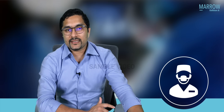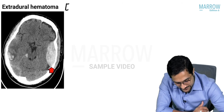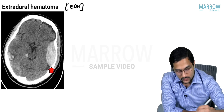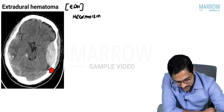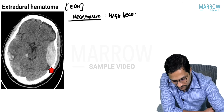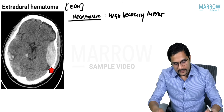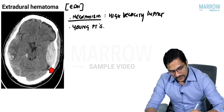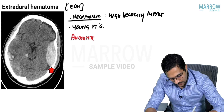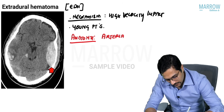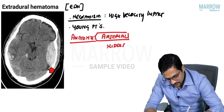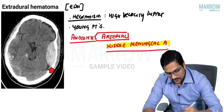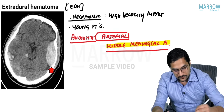The next important condition is EDH or extradural hematoma. EDH occurs due to a high velocity impact. The age group in which it is seen is usually young patients. Anatomically, it is usually arterial in nature, and the vessel implicated is the middle meningeal artery. This question has been asked many times in the exam — the middle meningeal artery is the vessel implicated in extradural hemorrhages.